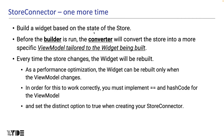The StoreConnector is very important, so let's go over it again. StoreConnector builds widgets based on the state of the store. Before the builder callback is executed, the converter callback converts the store into a view model tailored to the specific widget. The widget rebuilds whenever the store changes, but as part of performance optimization, you can make the widget rebuild only when the view model changes.